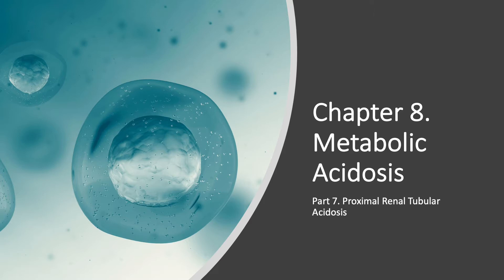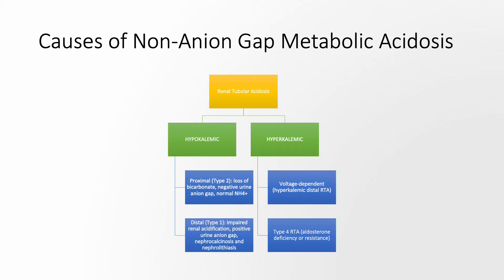We are going to discuss proximal renal tubular acidosis. In the last lecture, I provided a general overview of renal tubular acidosis. When we say renal tubular acidosis, this is a non-anion gap metabolic acidosis. The anion gap is normal and chloride is high, so it's hyperchloremic. And the origin is the renal tubule, like the name says.